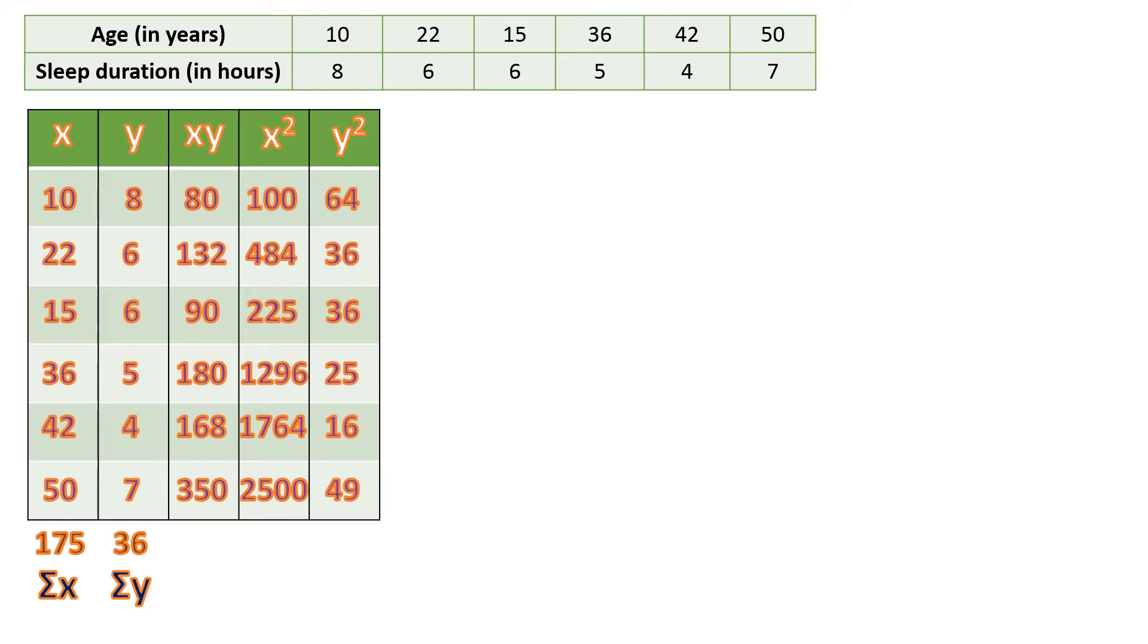Then we're going to get the sum of the XY, which is a total of exactly 1000. Then the sum of square of X, which is 6369. Then the sum of the square of Y, which is 226.